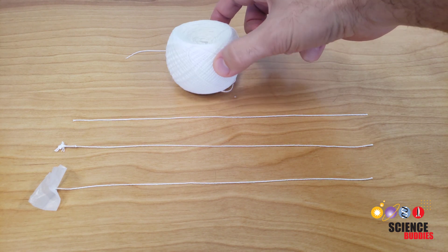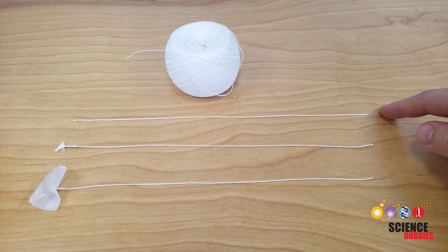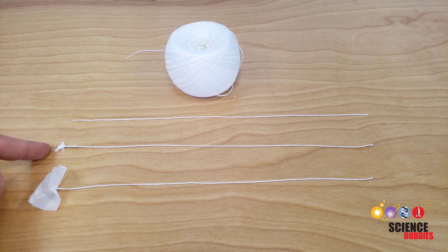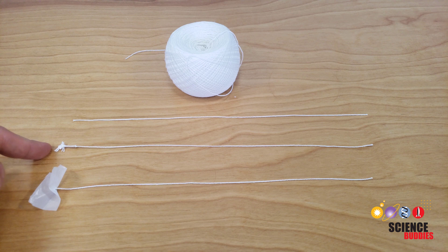Luckily you can try this experiment at home with string. You'll need three strings of equal length. One with nothing attached. One with a large knot tied at one end. This adds a lot of mass, but not a lot of surface area, so it doesn't add much air resistance.